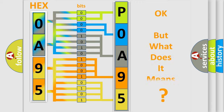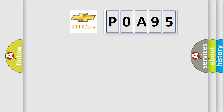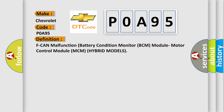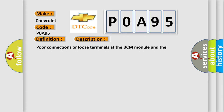We now know in what way the diagnostic tool translates the received information into a more comprehensible format. So, what does the Diagnostic Trouble Code POA95 interpret specifically for Chevrolet? The basic definition is: faulty battery condition monitor BCM module or motor control module MCM — hybrid models. Possible causes include poor connections or loose terminals at the BCM or MCM, open circuit between the BCM and MCM, BCM may need to be updated with the latest software, or a faulty BCM.